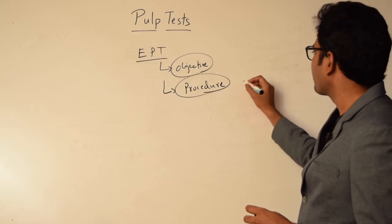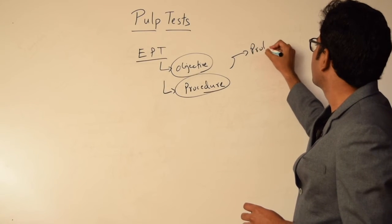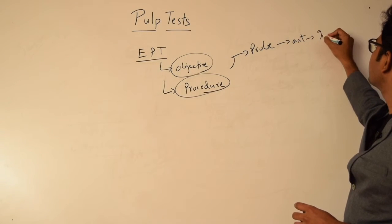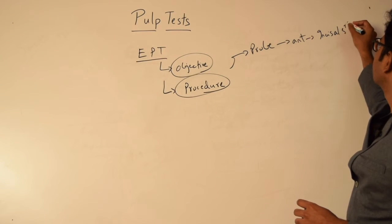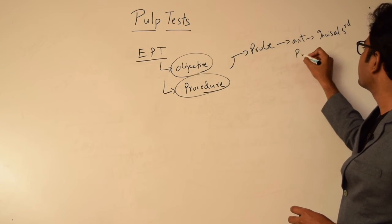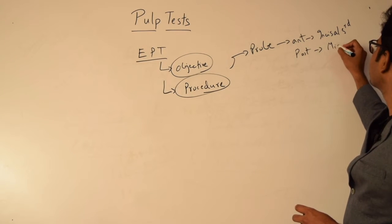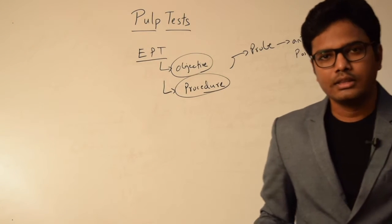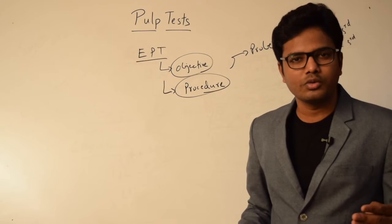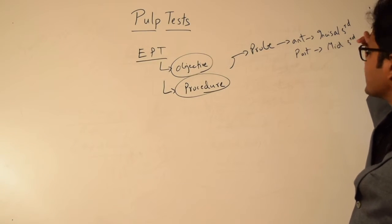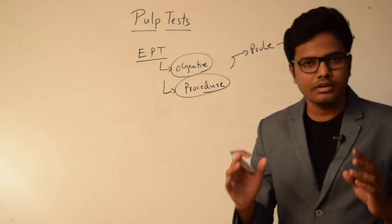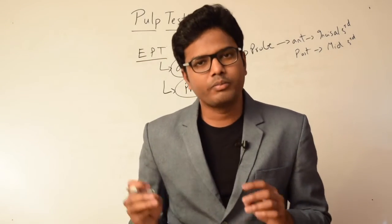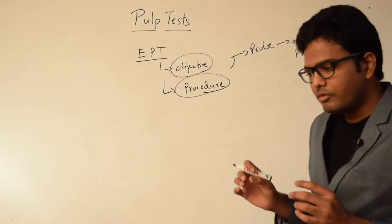The placement of the probe in case of anteriors is the incisal third. In case of posteriors, the probe has to be placed in the middle third of the facial surface. The reason is that many studies have clearly shown that in case of incisal thirds of anteriors and middle third of posteriors, the nerve density is very high.